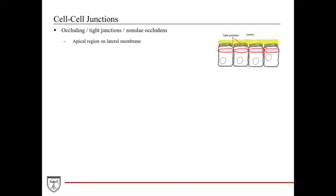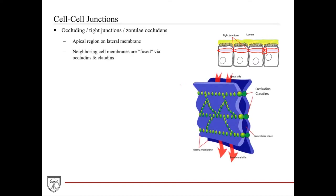When we zoom in onto one of these regions where the tight junction is coming together between the two neighboring cells, we see one cell membrane here and one cell membrane from the neighboring cell. Bound within the cell membrane of one cell, we see these protein complexes made up of lots of different proteins, but we'll name just two: occludins and claudins. These protein complexes from one cell membrane fuse tightly with the protein complexes from the neighboring cell, essentially forming a seal much like a Ziploc bag between the two cell membranes.